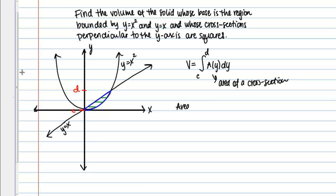So here my cross sections are squares. So the area of a square is simply side squared. Or I will write s squared for now. So what we need to do is we need to come up with an expression for the length of the side of these squares.